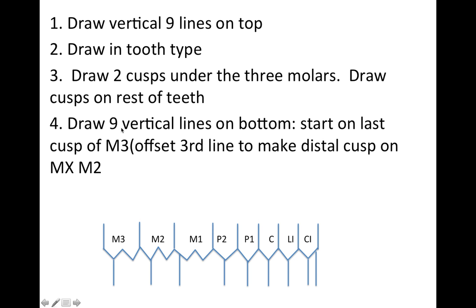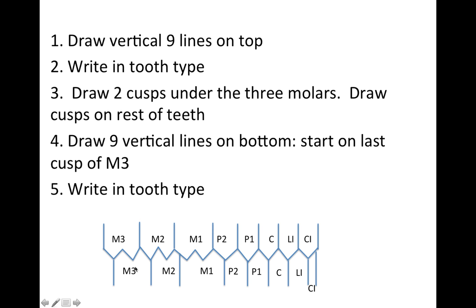The next step is to draw another nine vertical lines on the bottom, starting at the third molar. There is an exception to this rule because traditionally each line comes down off of a cusp. You'll notice that when we draw the third line, we push it off to the distal a little bit — this is going to be the first molar. We do that because it represents the distal cusp right there.